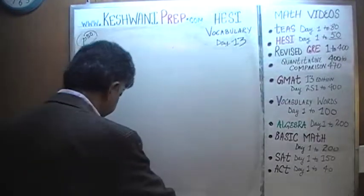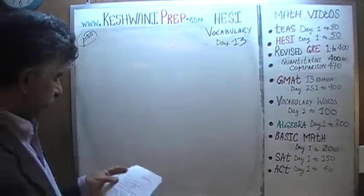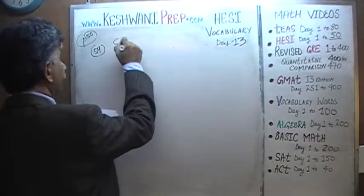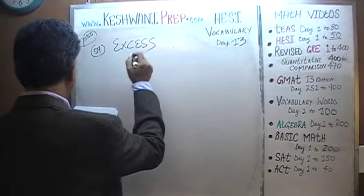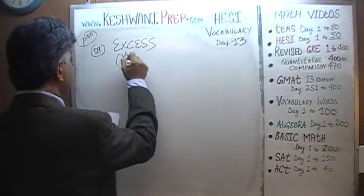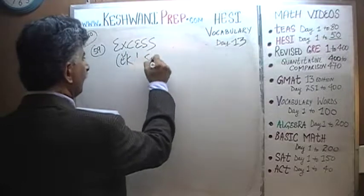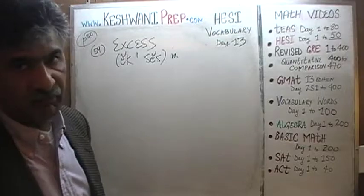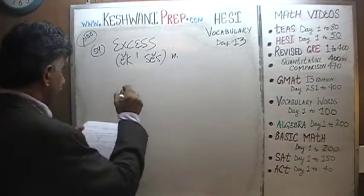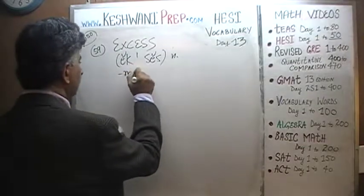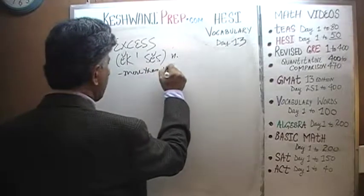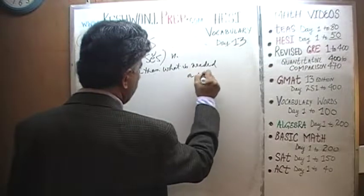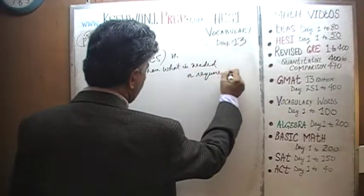The very first word that we have here is a very simple, very straightforward word — just two syllables. The word is: excess. What does excess mean? It just means more than what is needed. More than what is needed or required.